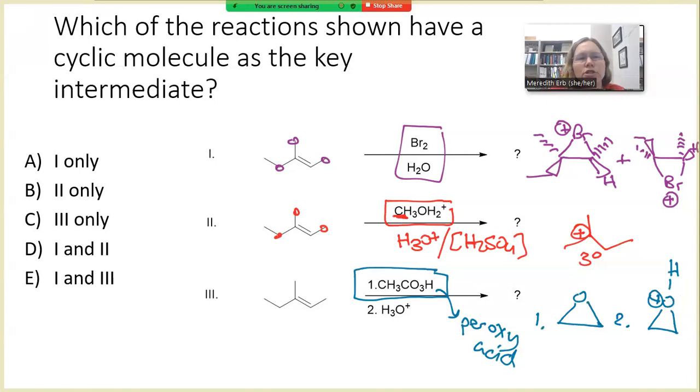So to answer this question, which of the reactions shown have a cyclic molecule as the key intermediate? That's going to be reaction number one and reaction number three. So one and three, answer choice E is the answer.